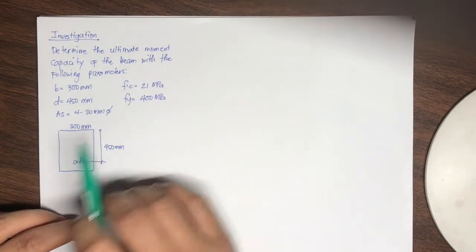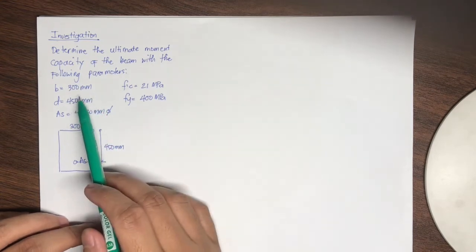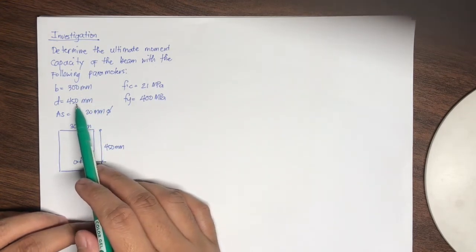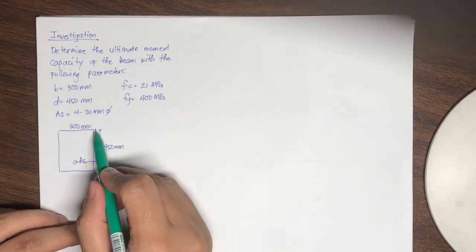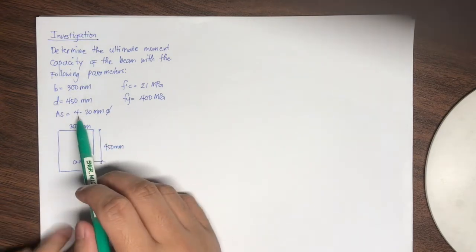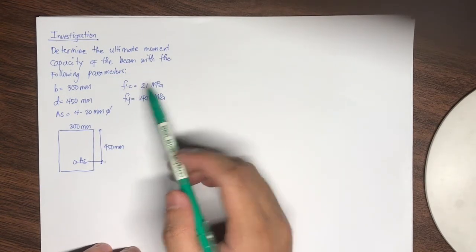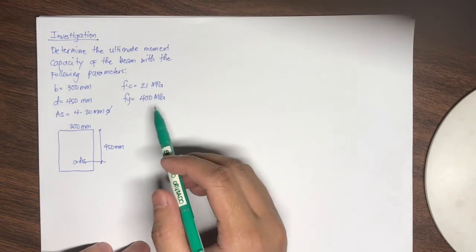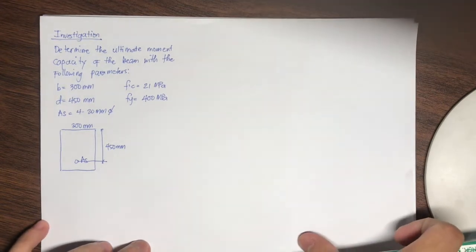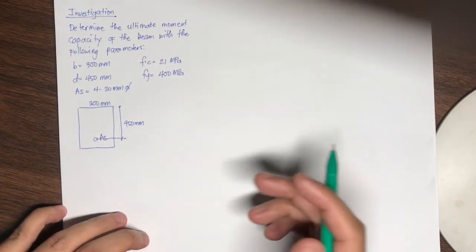In this investigation, we are to determine the ultimate moment capacity of the beam with the following parameters: breadth or width = 300 mm, effective depth = 450 mm (measured from the compression-most fiber to the centroid of the reinforcement), area of steel reinforcement = 4 number-20 (20 mm diameter) bars, specified compressive strength f'c = 21 MPa, and yield strength of steel fy = 400 MPa. First, we assume that the steel reinforcement will yield.